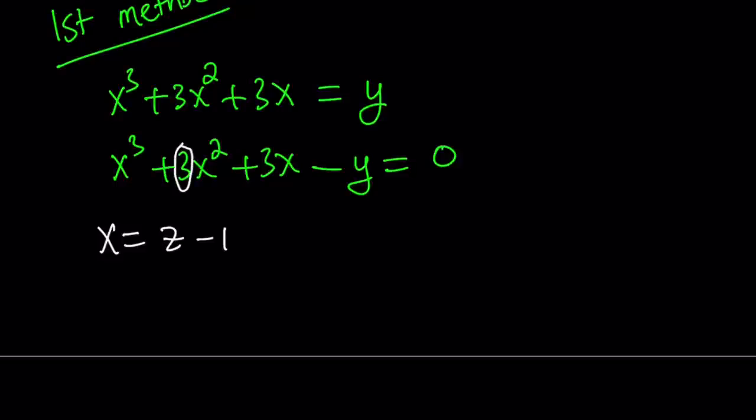You take the coefficient of x squared and divide by negative 3. Why negative 3? Because it has to be negative. Why 3? Because it's the power. It's the degree. So if you had a quartic you would divide by negative 4. If you had a 4 there of course. Or anyways you get the idea hopefully. So 3 divided by negative 3.